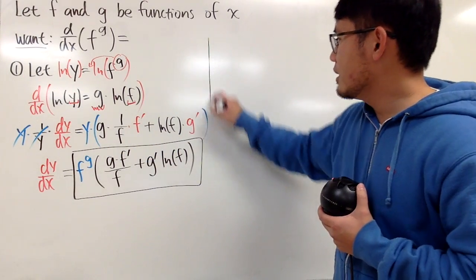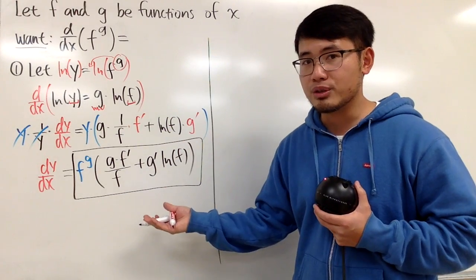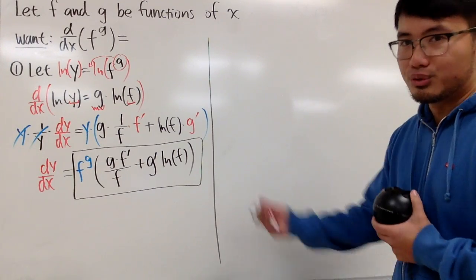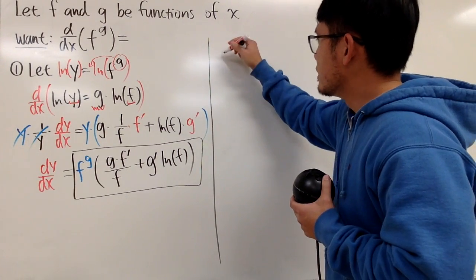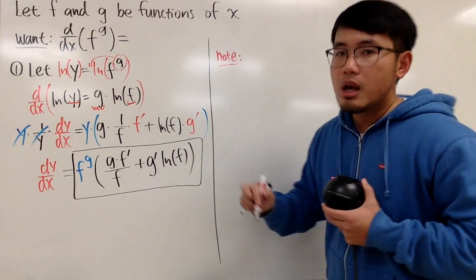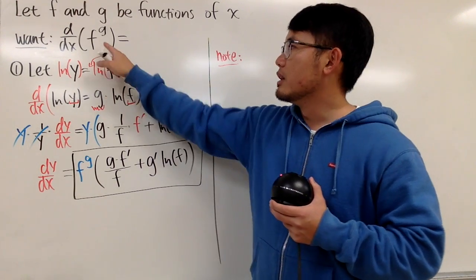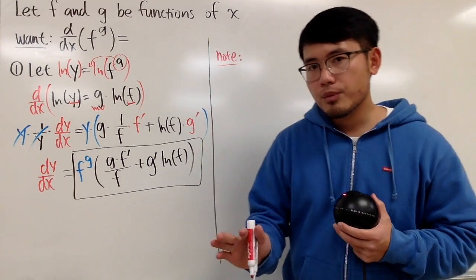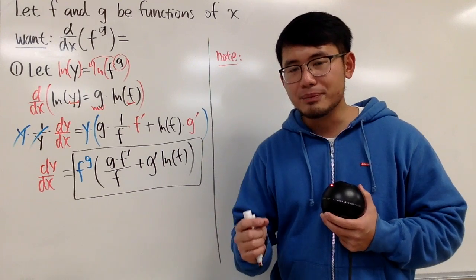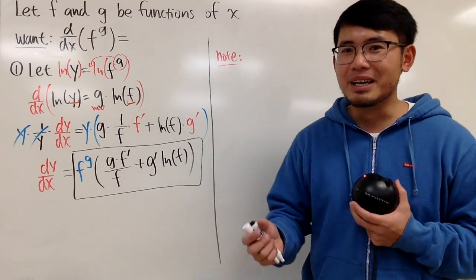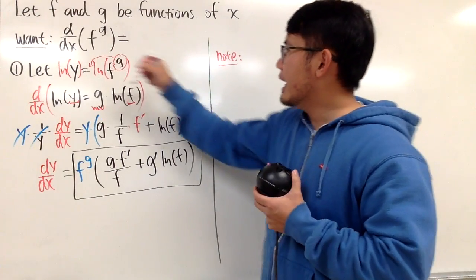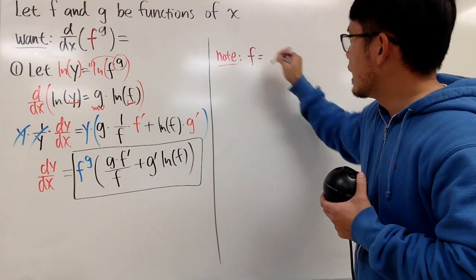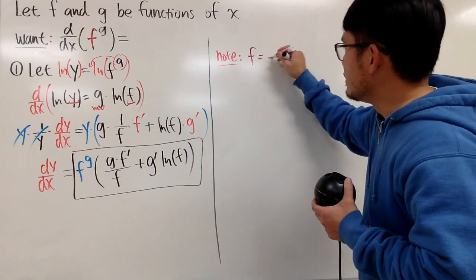It's not easy to remember, so I think it might be better if you just do this procedure to derive it when you have a function to a function power. But if you remember the formula, of course use it. Anyway, the second way is the following. Notice this is rather interesting because the base is a function — it's f. In calculus, you generally want to work with base e, so I will look at the base f and ask: how can I write f as e to the something?